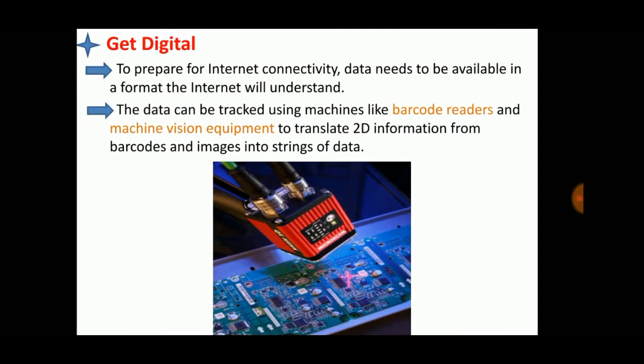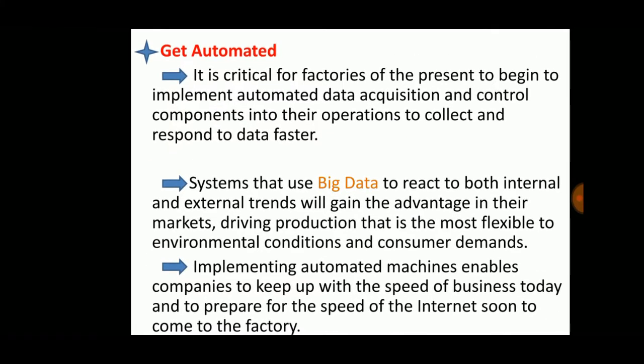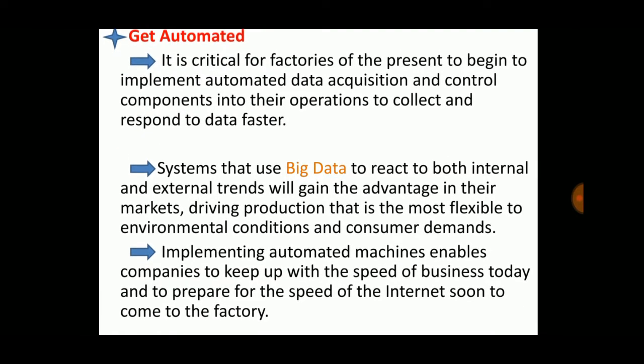To make things digital, data can be tracked using machines like barcode readers or QR scanners. Barcodes or QR codes should be placed on products so we can retrieve product data by scanning them. Machine vision equipment translates 2D information from barcodes and images into strings of data.